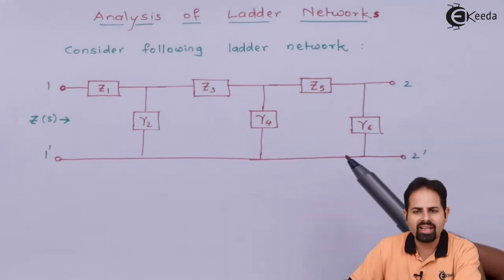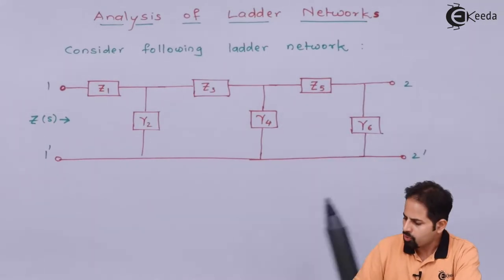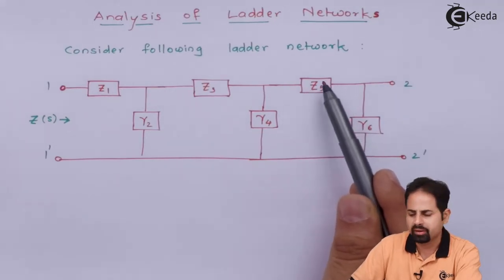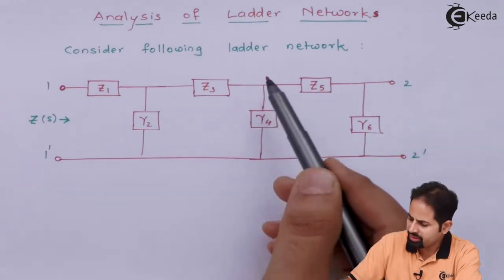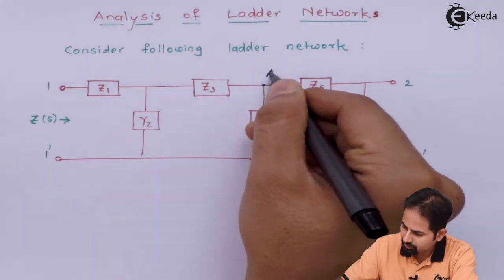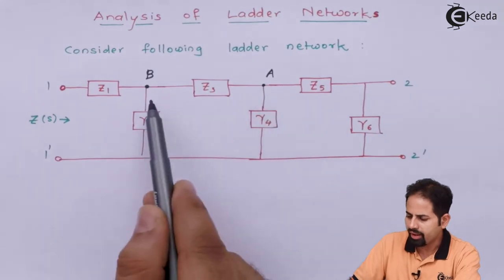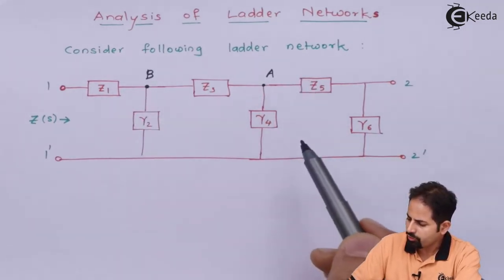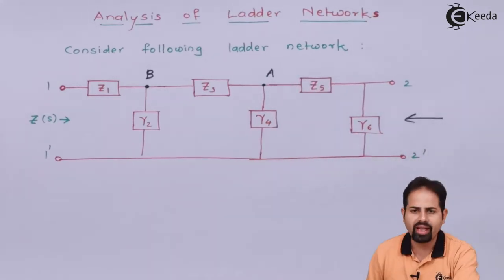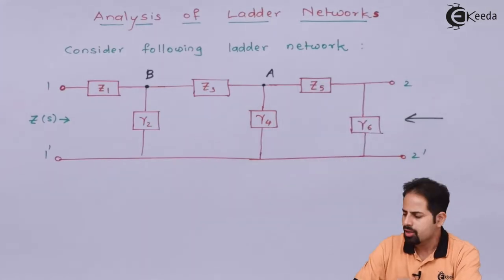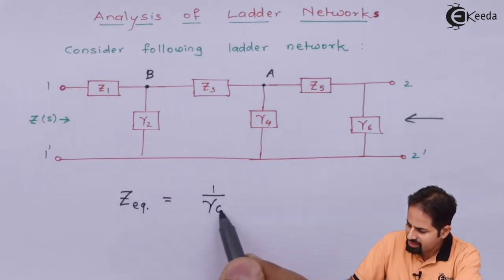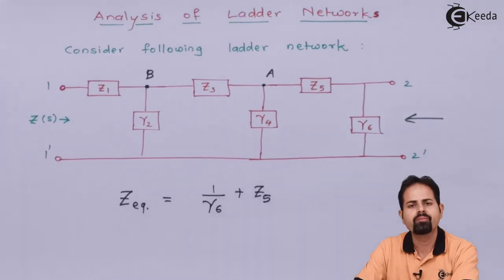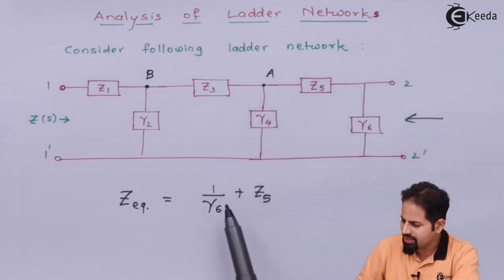Here I can see there is admittance Y6 which is added with this Z5. So if I want to add both, because this Z5 is impedance and this is admittance, I will have to inverse this and then add with Z5. So let us give some name to this point. This is A and this point is B. So first what we will do, we will calculate the impedance which is seen and we will add Z5 and Y6. So while adding them, the equivalent impedance Z equivalent will be equal to 1 upon Y6 plus Z5. This will be because Z5 is in series and Y6 is in parallel and we are calculating impedance.